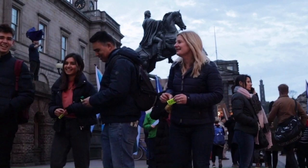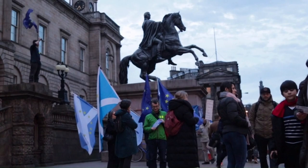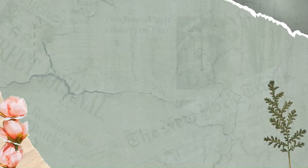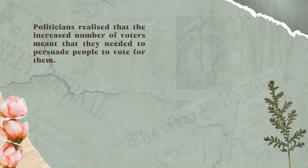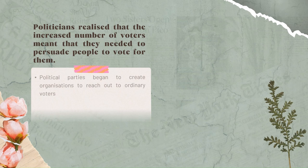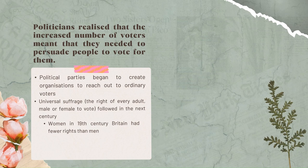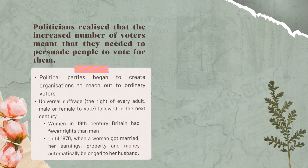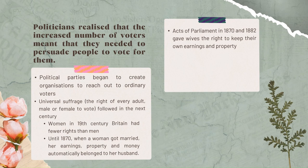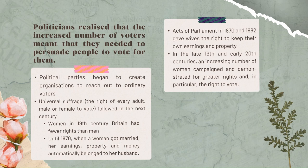However, the majority of men still did not have the right to vote and no women could vote. Politicians realised that the increased number of voters meant they needed to persuade people to vote for them, and political parties began to create organisations to reach out to ordinary voters. Universal suffrage — the right of every adult, male or female, to vote — followed in the next century. In common with the rest of Europe, women in 19th-century Britain had fewer rights than men. Until 1870, when a woman got married, her earnings, property, and money automatically belonged to her husband. Acts of Parliament in 1870 and 1882 gave wives the right to keep their own earnings and property. In the late 19th and early 20th centuries, an increasing number of women campaigned and demonstrated for greater rights and, in particular, the right to vote. They formed the women's suffrage movement and became known as suffragettes.